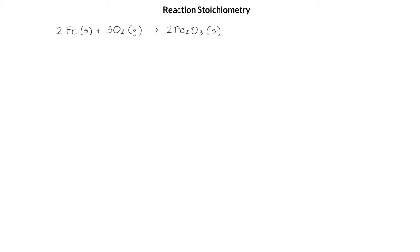Let's look at a fairly simple chemical reaction. Here we have 2 moles of iron reacting with 3 moles of oxygen to produce 2 moles of iron(III) oxide. We can use this balanced equation to calculate various amounts in either moles or grams of the reactants and products.